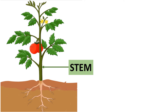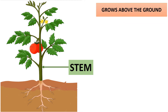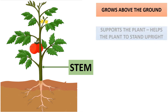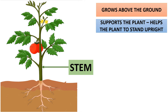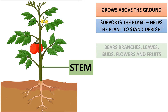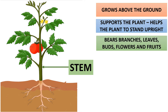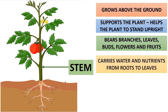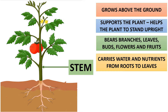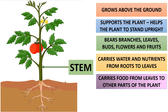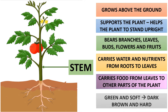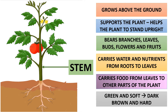Next is the stem. The stem is the part of the plant which is found above the ground. It supports the plant and helps it to stand upright. It forms the basis of the shoot system and bears leaves, fruits, and flowers. It carries water and nutrients from roots to leaves and other parts of the plant. It also carries food made by leaves to other parts of the plant. Younger stems are green and soft, while the bark of trees becomes brown and hard as the tree grows older.